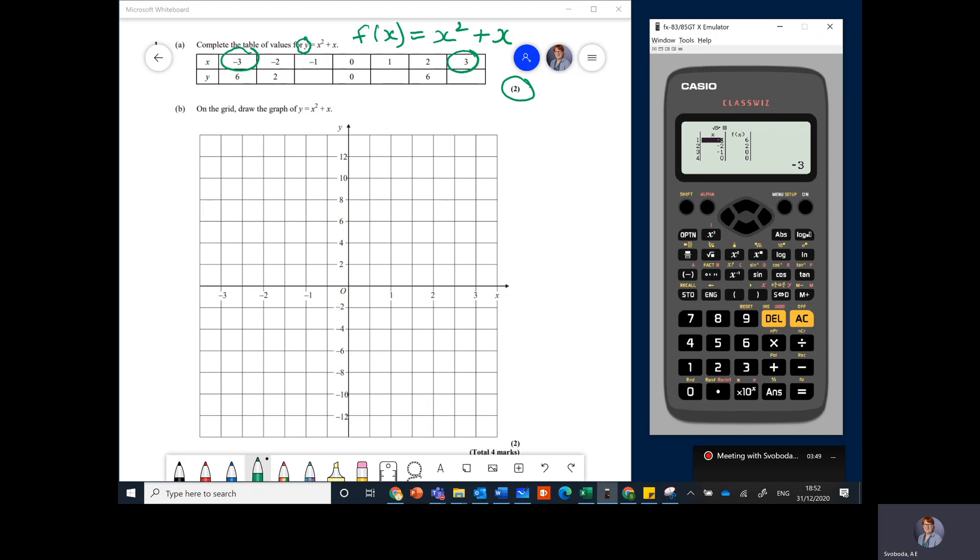Now what's great about this is that once you've got that, you can check that you've put it in right. Because that is the problem with calculators - you could type something in wrong and you wouldn't necessarily know that you were wrong. But this is fine because we can see that the first value is x is minus three and f of x or y equals six, which is what we've got. And then minus two, two, which is the same. So we can then start to fill in the blanks. So when x is minus one, f of x is naught.